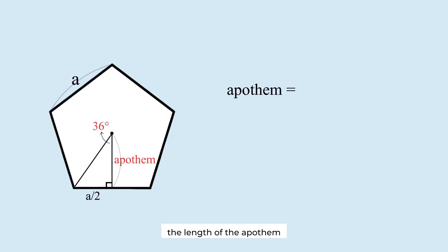In a regular pentagon, the length of the apothem is expressed like this. The value of tangent 36 degrees appears. However, 36 degrees is not a spatial angle such as 30 degrees or 45 degrees.